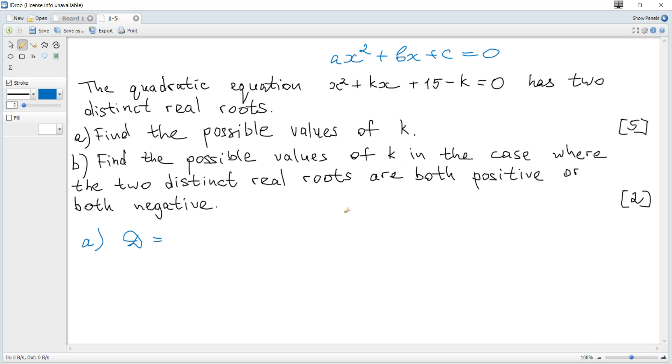So the discriminant becomes k² - 4(1)(15 - k). Here a is 1, and c is 15 - k.